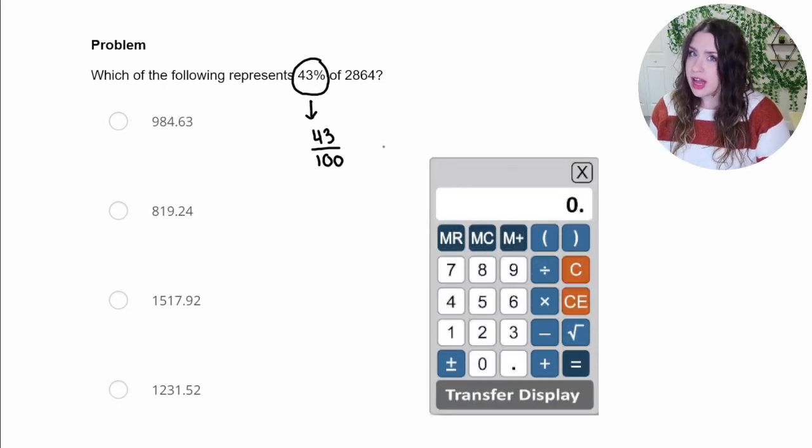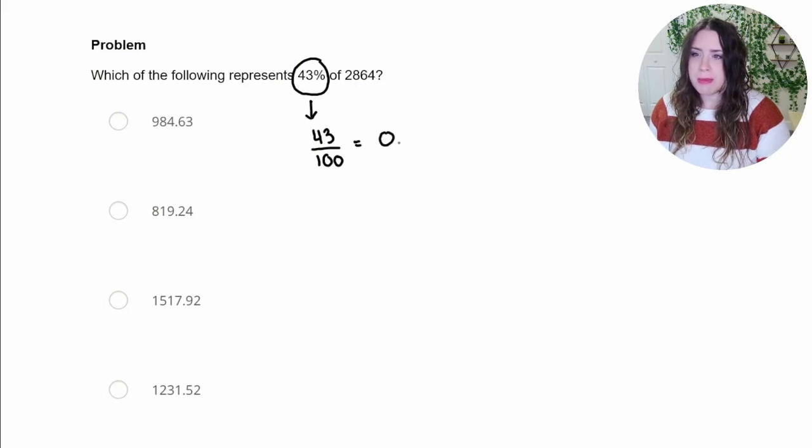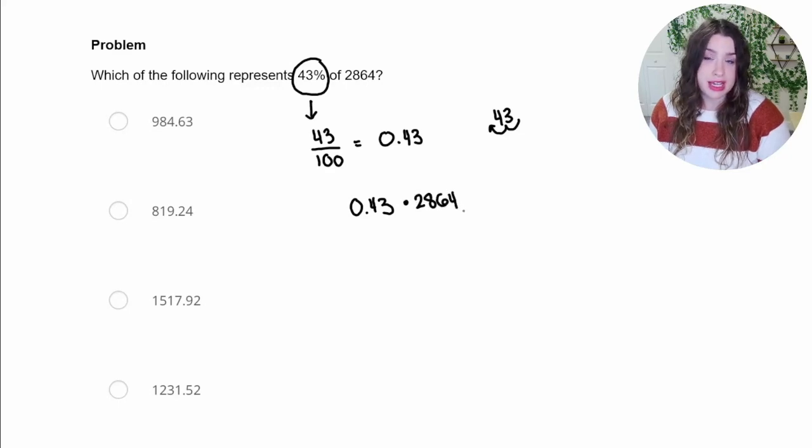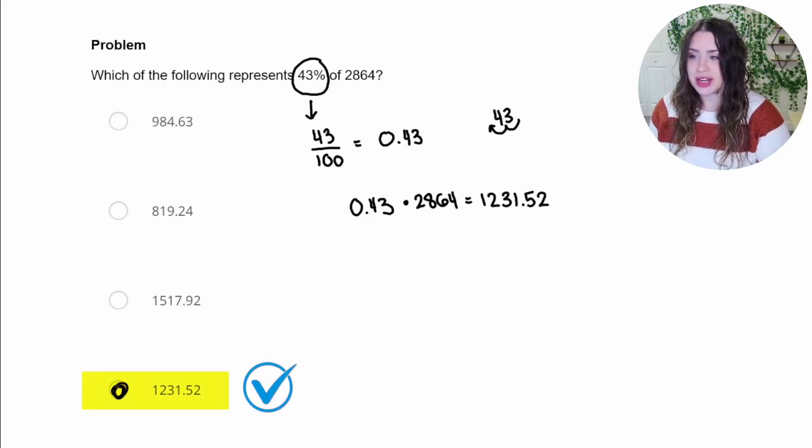So we can divide that on our calculator if needed. Or you may remember that to convert a percent into a decimal, you just simply take the number and move the decimal back two places. So either way, we will get the decimal 0.43, which then we are going to take that decimal percentage, 0.43, and we are going to multiply by 2,864. Definitely use that calculator. But when we go ahead and multiply that out, we're going to get 1,231.52, which we see is our correct answer right here.